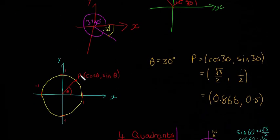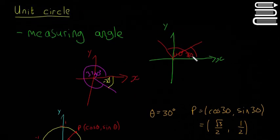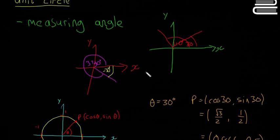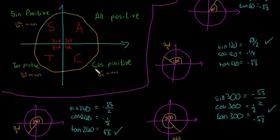You also have to know that at any point in the unit circle, the coordinates are cos theta, sine theta. And you have to know that you always measure angles from the positive x-axis. So that's a quick review of everything we did in the video. We're going to look at examples of where this becomes useful in the next video.